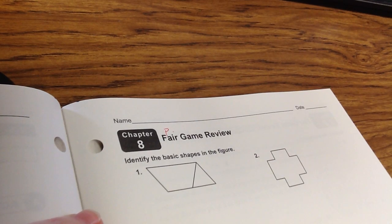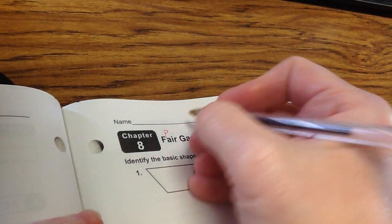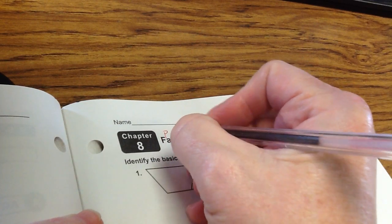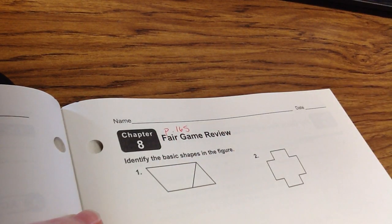Okay, so this is the Fair Game Review for Chapter 8. It's page 165 and this is part of the homework for today.